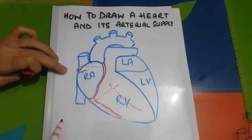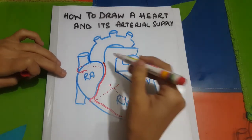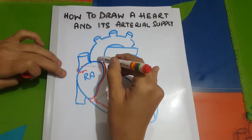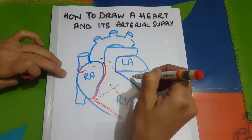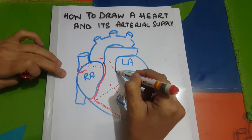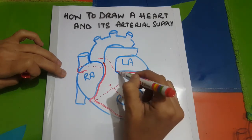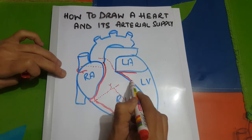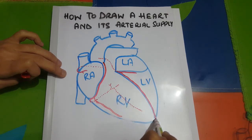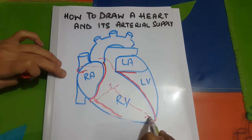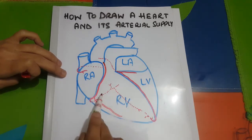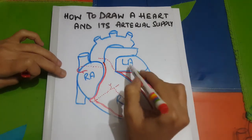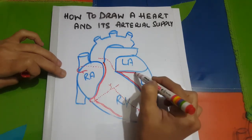At the end, the right coronary artery gives a branch to the AV node. This is the artery to the AV node, this is the posterior interventricular artery, and this is the right marginal artery. The left coronary artery also originates from the aorta at its base on the posterior side. It comes to the left interventricular atrioventricular groove, gives a branch to the anterior interventricular septum, runs here, and then comes to the back supplying the apex of the heart.